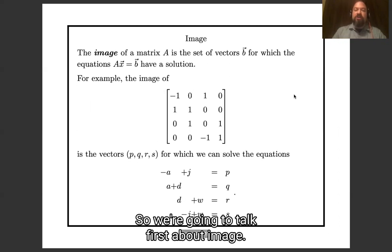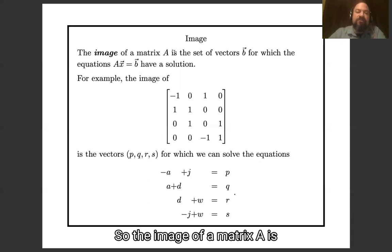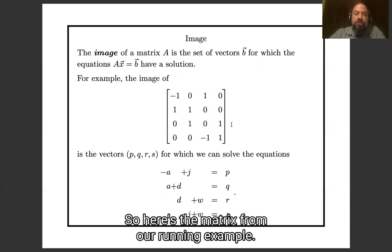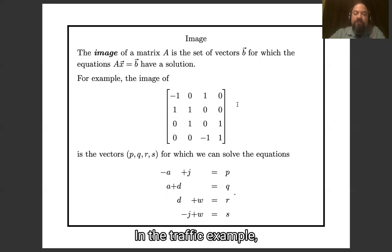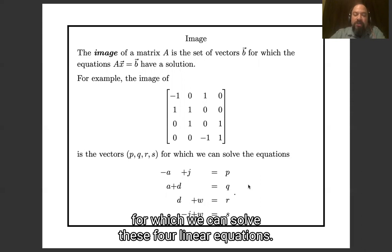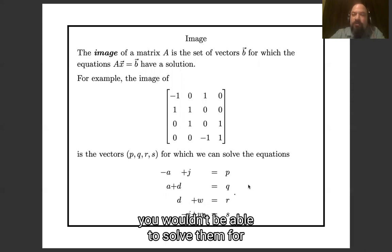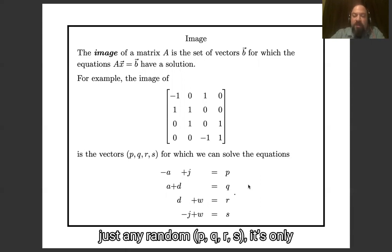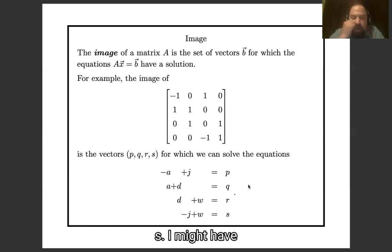And the kernel of a tells us what ambiguity there is in solving the equations. So we're going to talk first about image. So the image of a matrix a is those vectors b where the equations ax equals b have a solution. So here's the matrix from our running example, from the traffic example. The image of this matrix is going to be those vectors pqrs for which we can solve these four linear equations. And we noted before, you wouldn't be able to solve them for just any random pqrs. It's only going to work out if q is equal to p plus r plus s. So anyways, the image is when you can solve these equations.